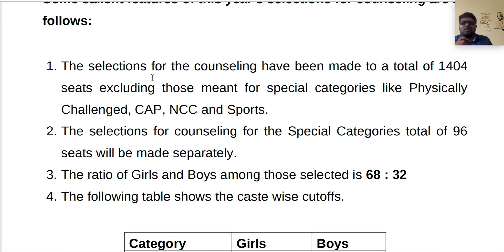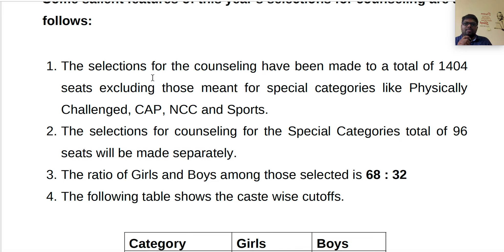Selections for counseling were made for a total of 1,404 seats, excluding special categories like physically challenged, central armed forces, NCC, and sports. For special categories, 96 seats will be made separately. The ratio of girls to boys among those selected is 68:32.